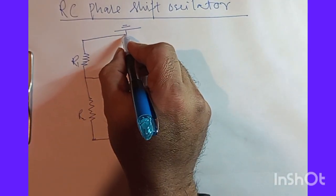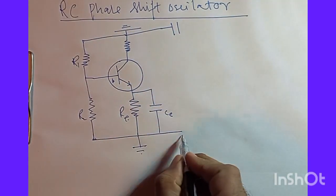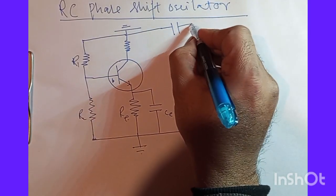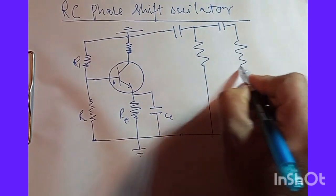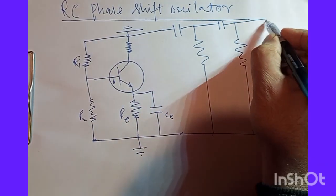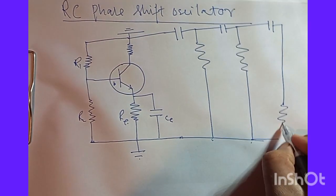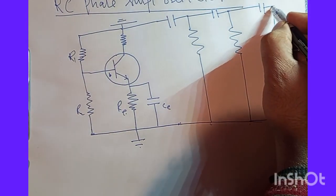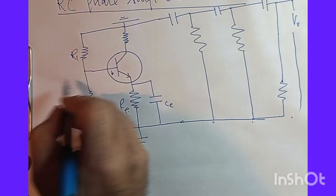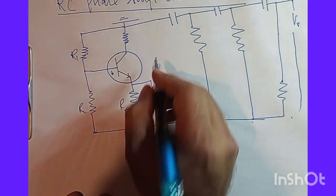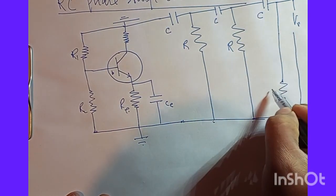With this amplifier I have three RC coupled oscillators, and then I have another capacitor, and then we will have output and we will have input from this side. So we have a capacitor, we have a resistance, we have a capacitor, we have a resistance, we have a capacitor, and we have a resistance.